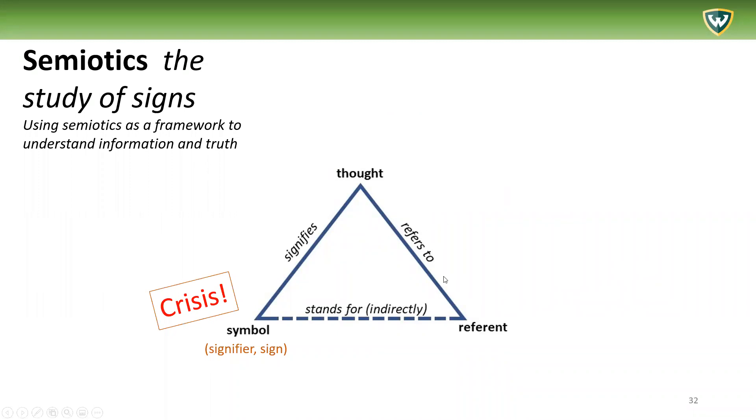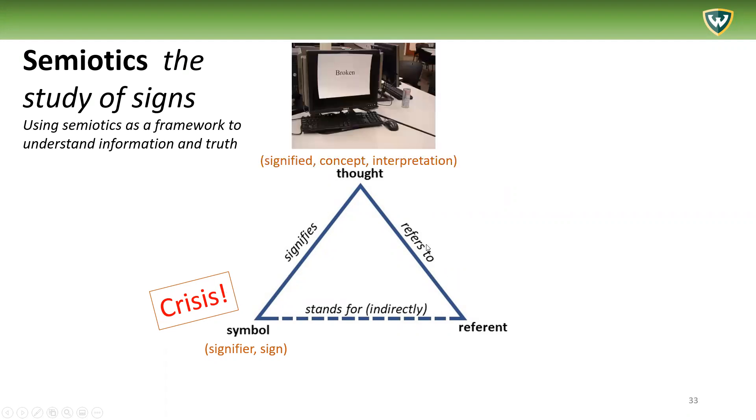So very simple example here. You see the set of symbols here, various letters and an exclamation point. This is a word in English and we can think of this as a sign or a symbol. And then someone sees the sign and symbol 'crisis' and then they think, oh my god, all the computers in the library are broken. We have a crisis and that's the interpretation here.